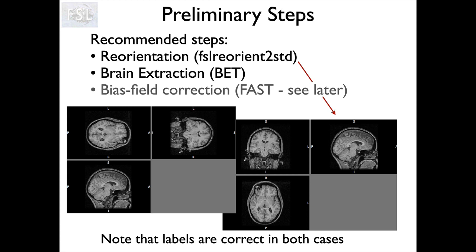We also recommend doing brain extraction, which we talked about before. Another thing that can be useful is to do bias field correction, particularly if you've got a noticeable strong bias field within your images. If it's a moderate bias field then generally tools work fine without doing that explicitly, but it's certainly useful if you are seeing any prominent bias fields.